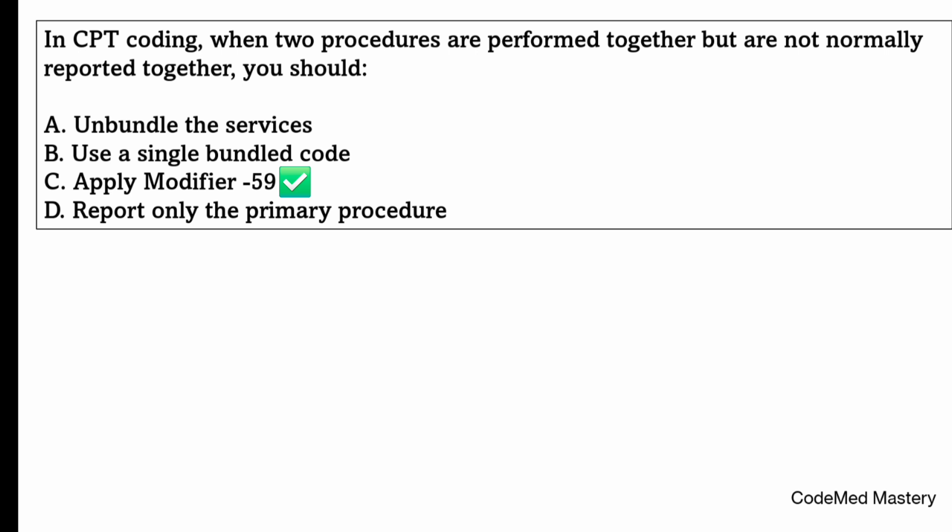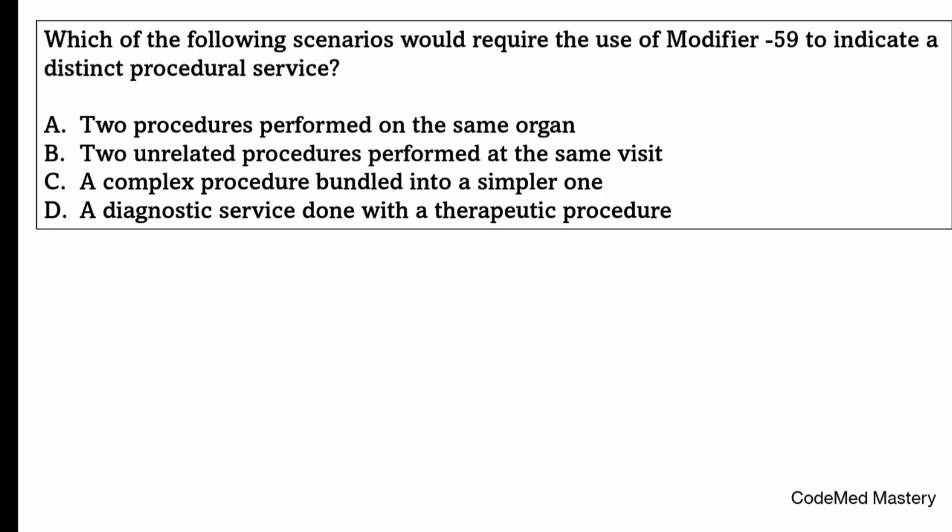Next question: which of the following scenarios would require the use of modifier 59 to indicate a distinct procedural service? Option A: two procedures performed on the same organ; option B: two unrelated procedures performed at the same visit; option C: a complex procedure bundled into a simpler one; option D: a diagnostic service done with a therapeutic procedure.